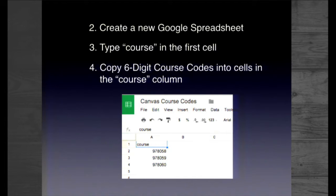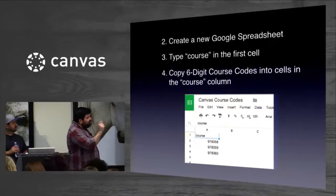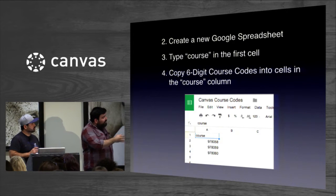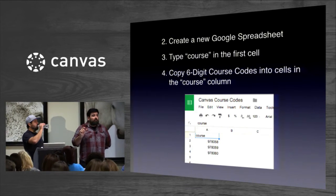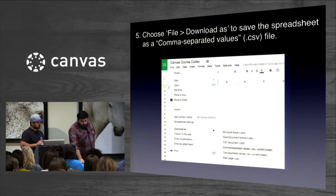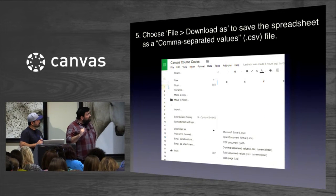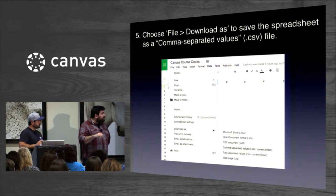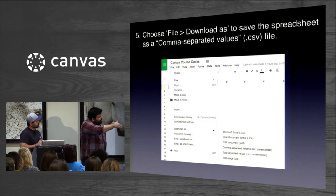If you want to work on multiple courses at the same time, you need to give the Postman application a list of the URL codes for each of these courses. We use Google Sheets to do this — you actually do have to use Google Sheets, Excel does not work. Basically, you create a new Google spreadsheet. In the very first entry in the first column, you provide a label which will act as a variable. In this case, we use the label 'course.' Beneath that label, you list the URL codes for each one of the courses you want to work on. Then you download the Google spreadsheet as a CSV file and save it to your computer.